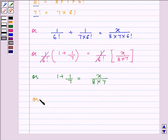Taking 7 as the LCM, we have 7 plus 1 in the numerator equal to x divided by 8 times 7. The 7 will cancel out with each other.